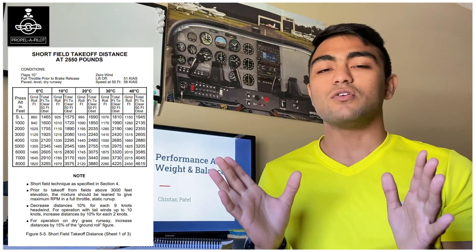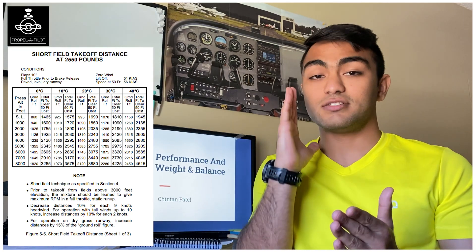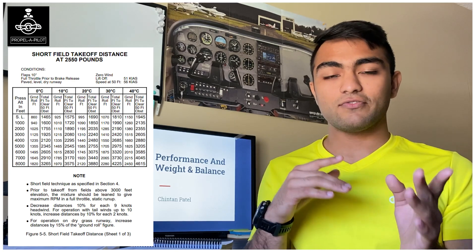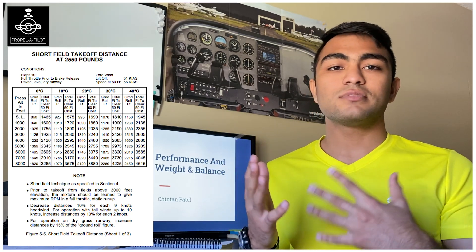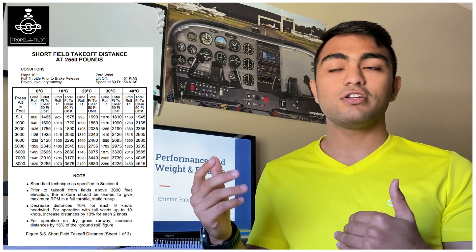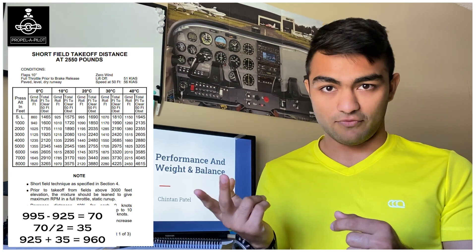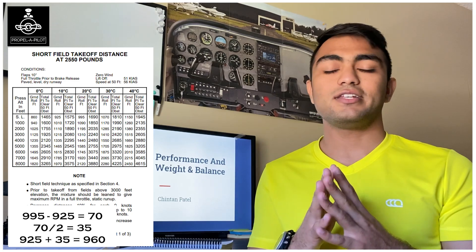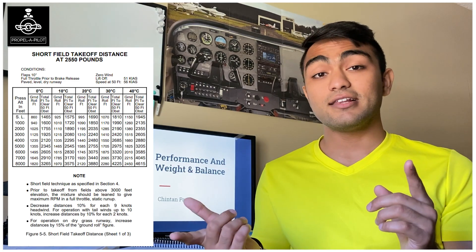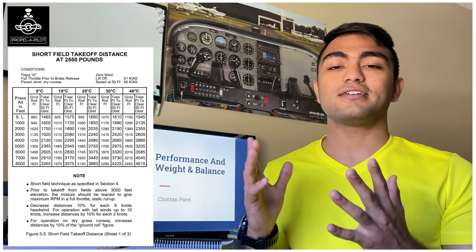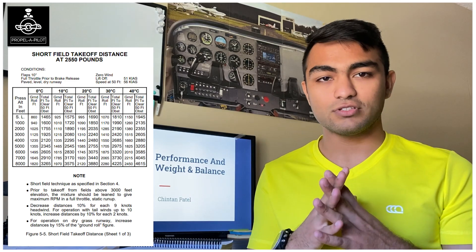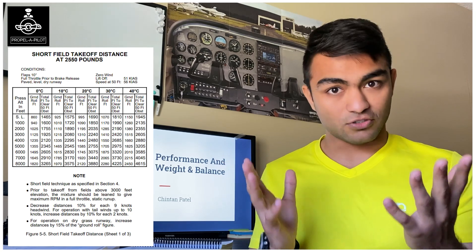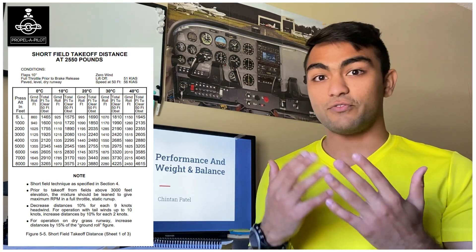To make things simpler, let's just take 15 degrees, which is the midpoint of 10 and 20. The ground roll becomes the midpoint of 925 and 995: the difference is 70, divide by 2 to get 35, add 35 to 925 or subtract from 995, and you get 960 feet. Similarly, by interpolating between the 10 and 20-degree values for 15 degrees Celsius, we get around 1,633 feet total distance required to clear a 50-foot obstacle.